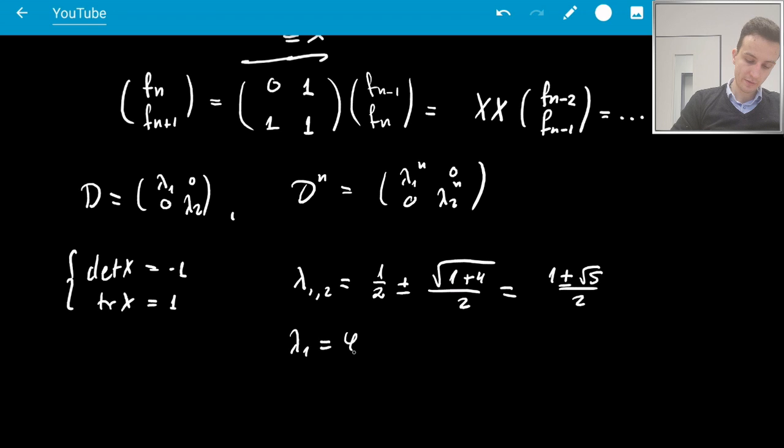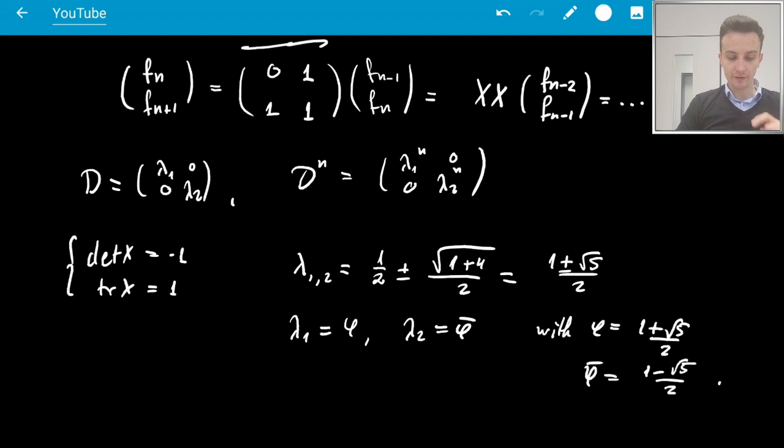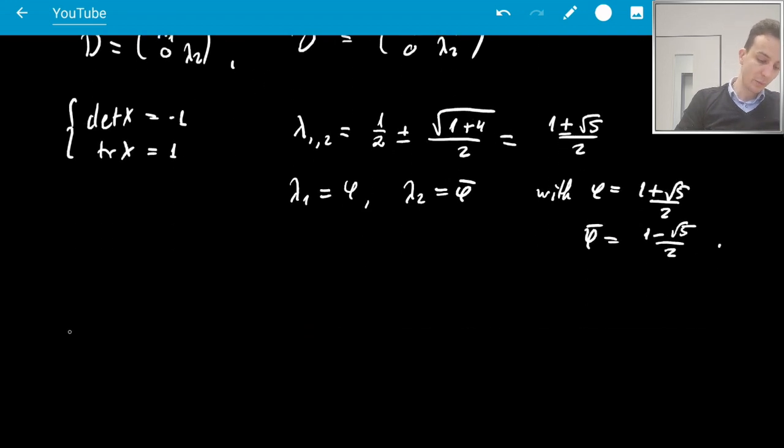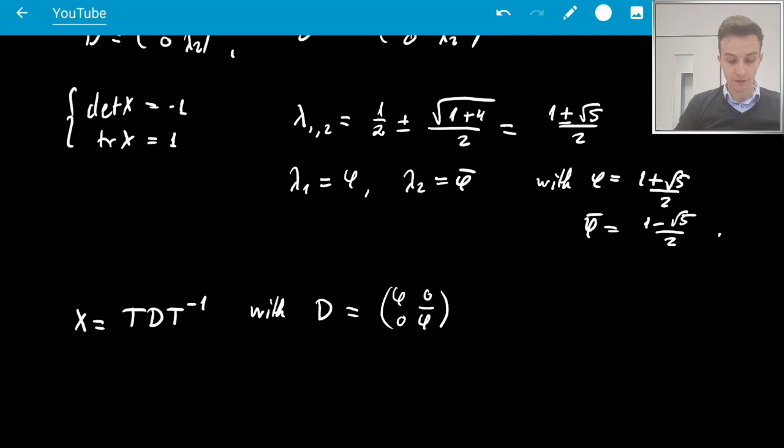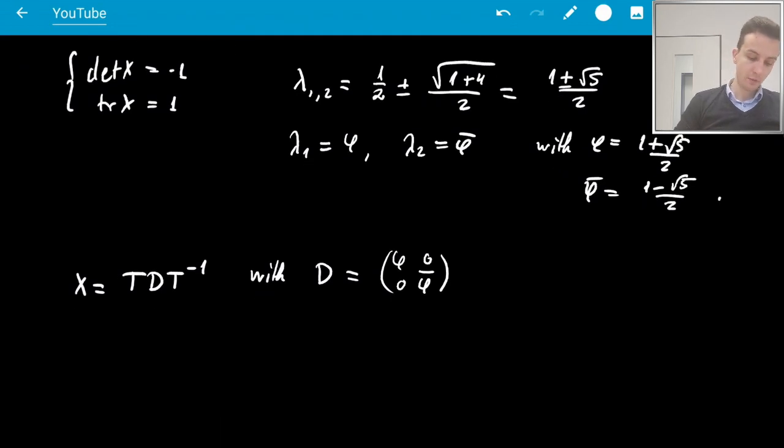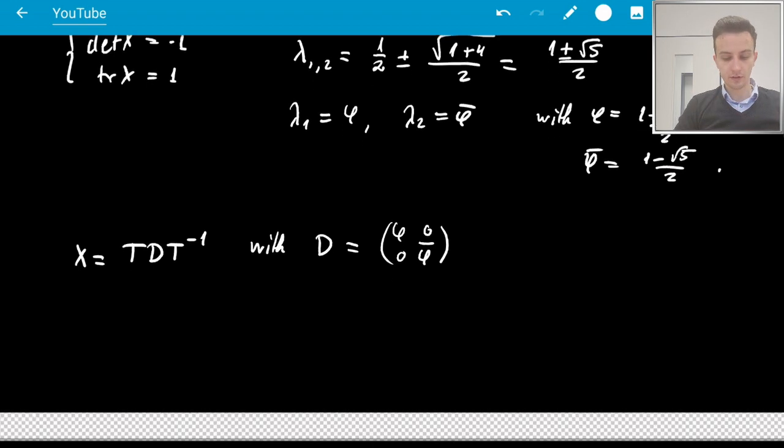So in particular, I can choose lambda 1 is phi and lambda 2 is phi bar with phi equals 1 plus square root 5 over 2 and phi bar equals 1 minus square root 5 over 2. Okay, so we have the eigenvalues of x and that means that we can write x as T D T inverse with D equals phi, phi bar, 0, 0. Okay, and T is some unitary transformation. So T will consist of the two eigenvectors of x.